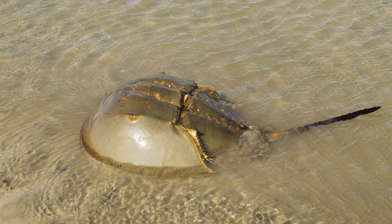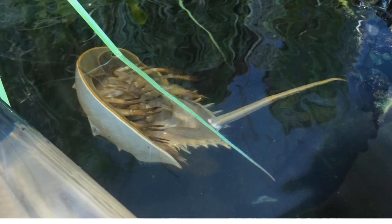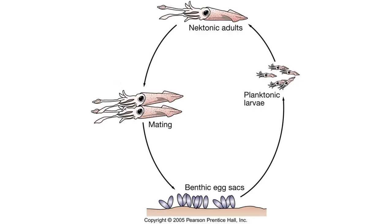Horseshoe crabs may also be considered nectobenthic — they usually sit and move along the seafloor, but sometimes they swim above it too. And of course, there are organisms that move between the plankton, benthos, and nekton over the course of their lives. Squid, for example, begin their lives as benthic egg sacs; when these eggs hatch, they release larvae which float and drift in the plankton, and eventually these larvae mature into nektonic adults capable of swimming against the current.